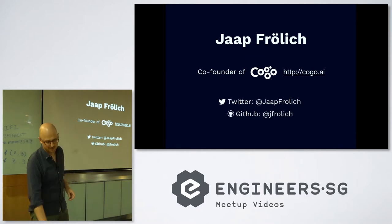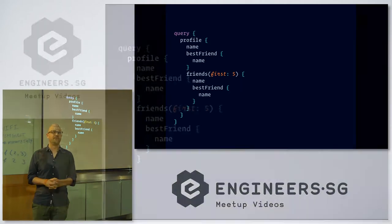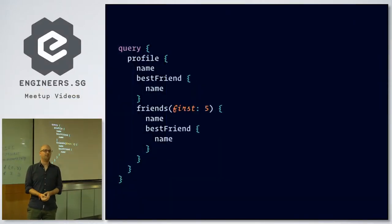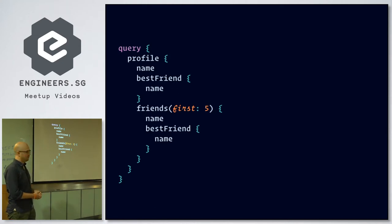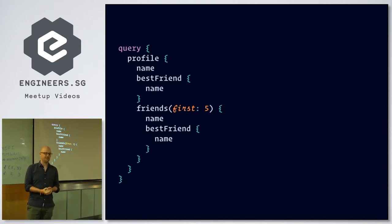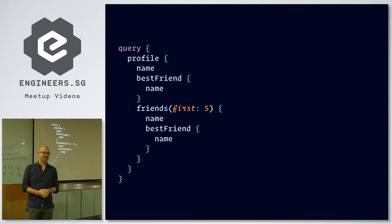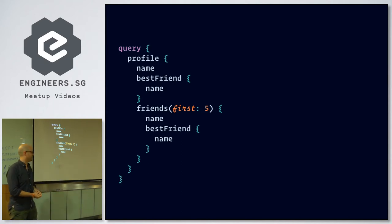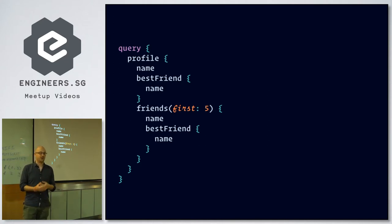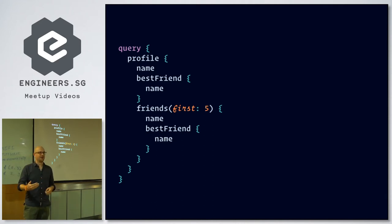My talk is actually going to be about data loading, and specifically this is a problem you probably run into if you use GraphQL. It's been on my mind for some time, and there was not really a great solution for this in Elixir. It's not specifically related to GraphQL — if you use other mechanisms to load data, you have the same issues probably.